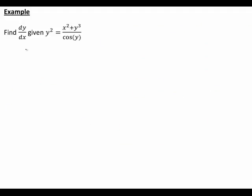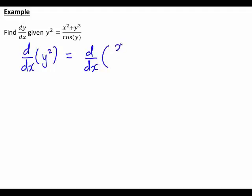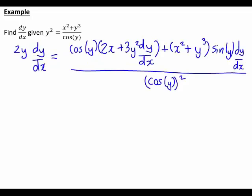Putting it all back together to find dy/dx for the original expression y squared equals x squared plus y cubed divided by cos y: we differentiate both sides with respect to x and equate them. So 2y dy/dx equals the full quotient rule expression we just derived. Now we need to rearrange this to make dy/dx the subject.